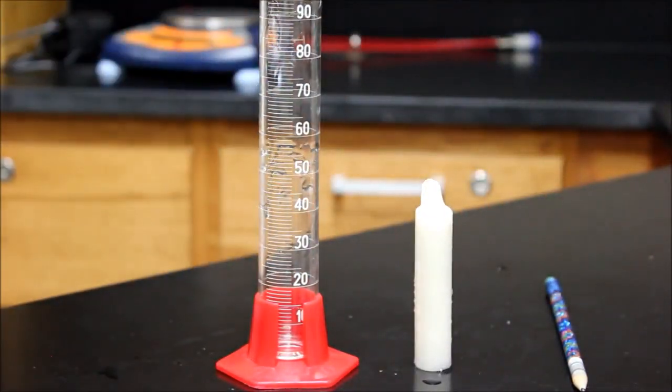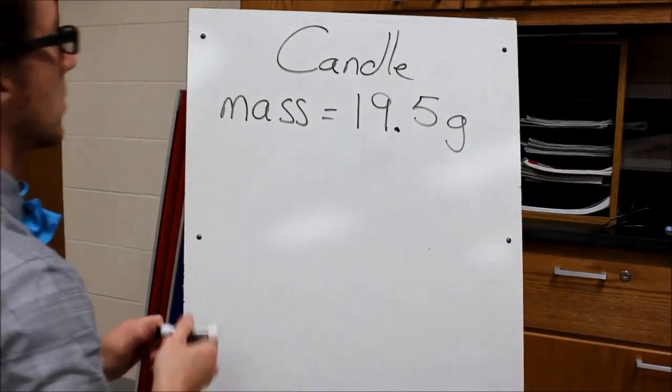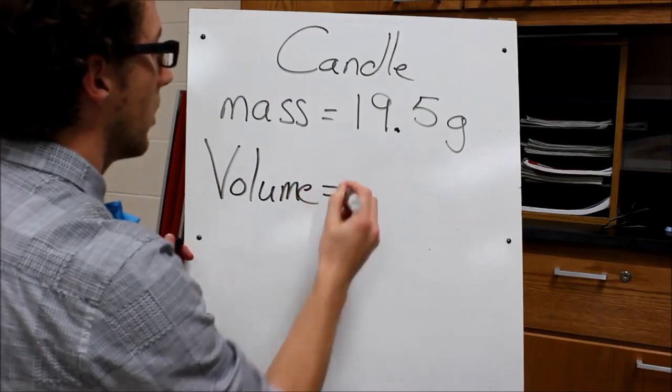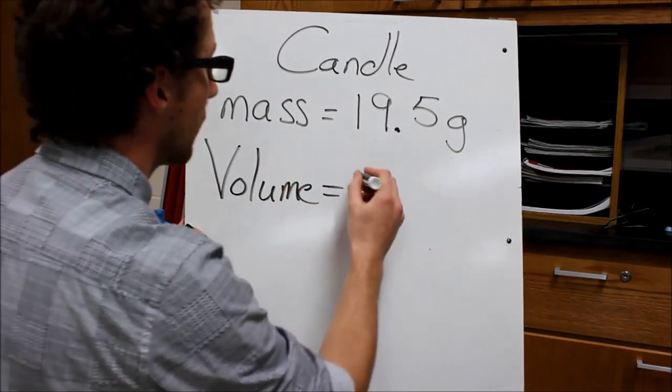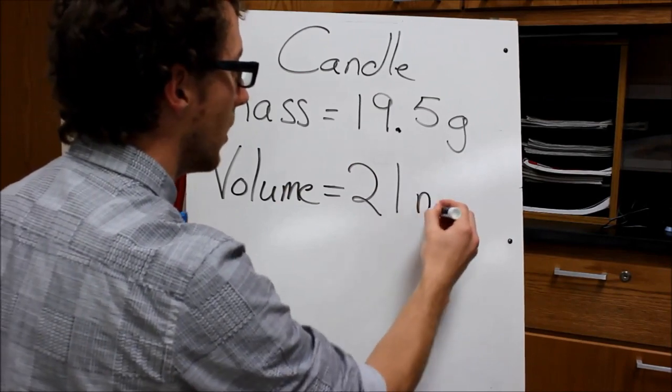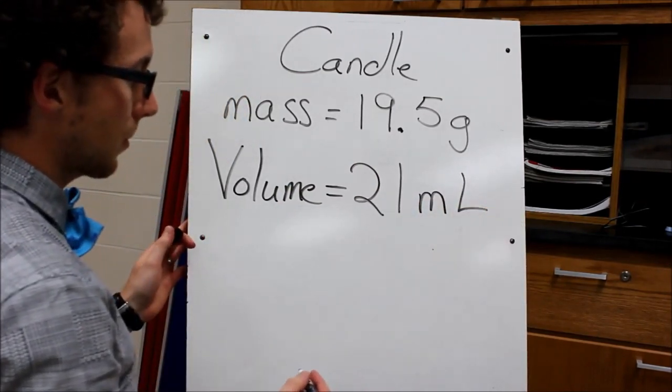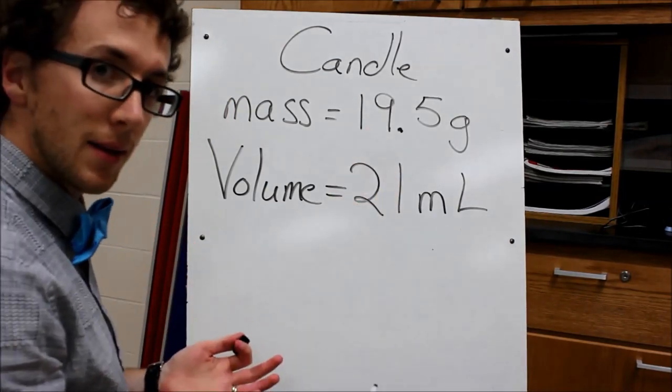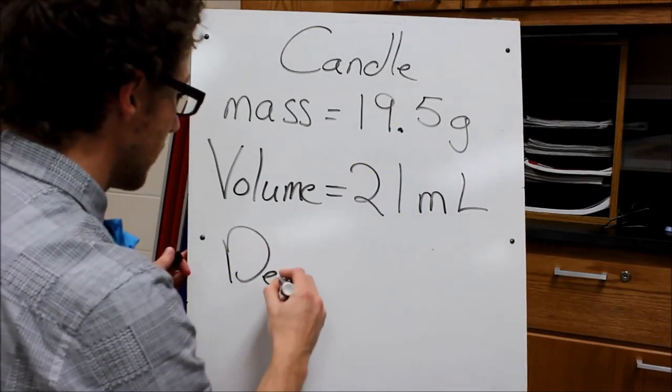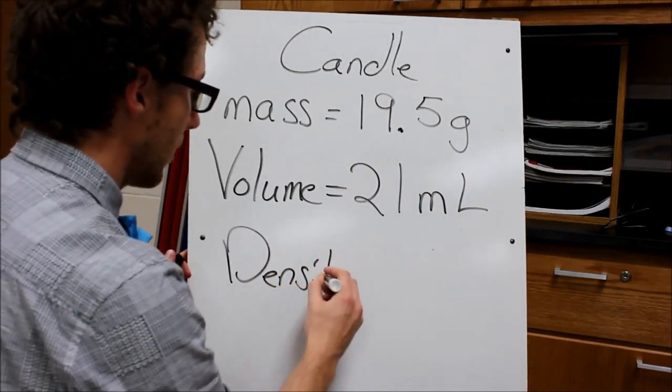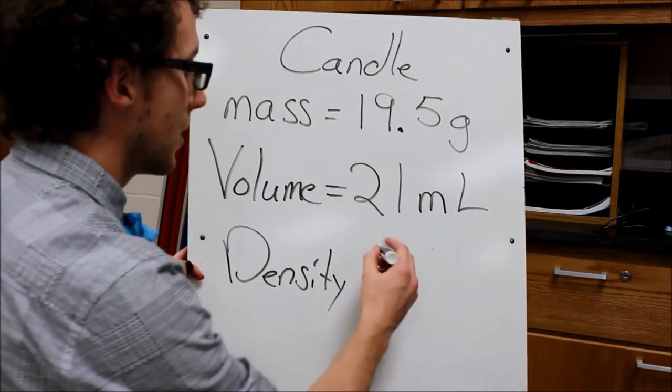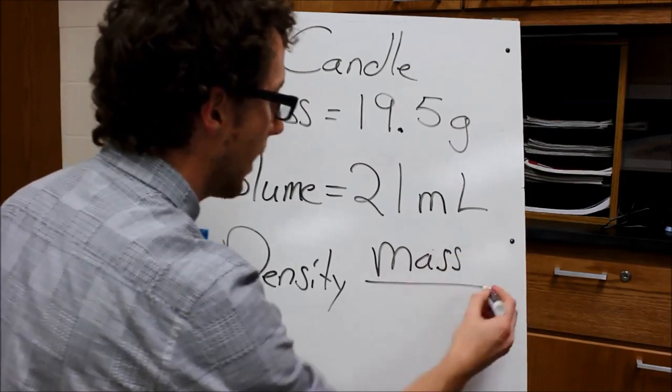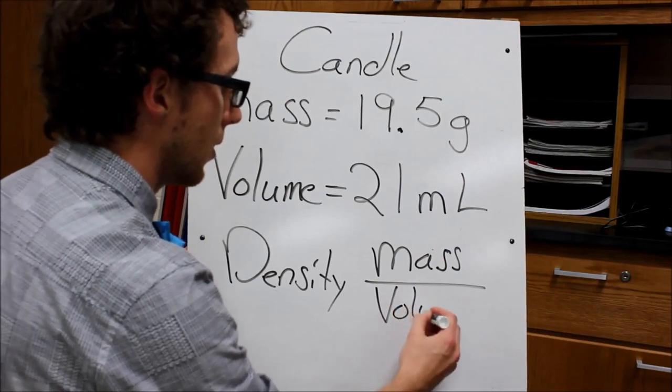So let's go ahead and write that down as well. So the volume of my candle is about 21 milliliters. Now that I have both of my values, I can find the density. The density of any object is just the mass divided by the volume.